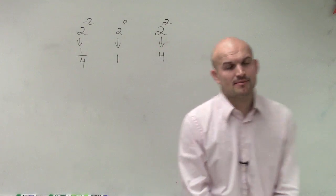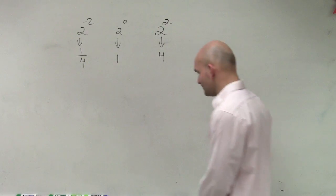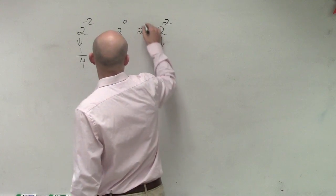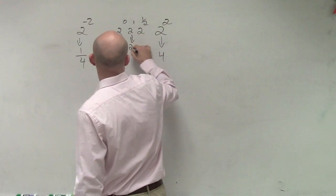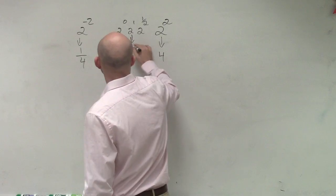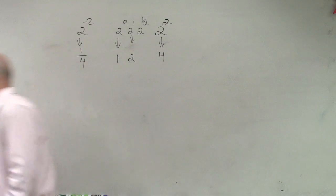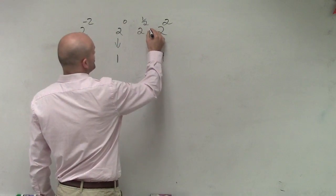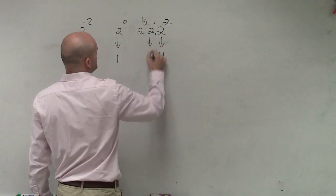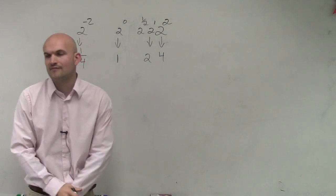So now what we're going to be talking about is what happens if I have 2 to the 1 half power. We know that 2 to the first power equals 2. So then what is going to be 2 to the 1 half power?